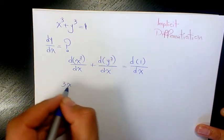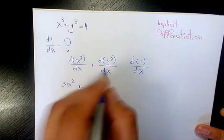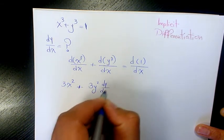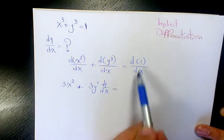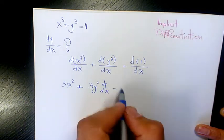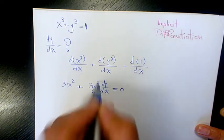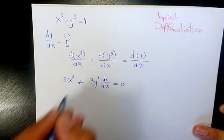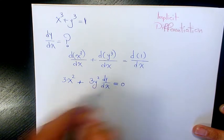So the first one is going to be 3x². The second one is going to be 3y² dy/dx, and the derivative of 1 with respect to x is going to be zero. Then after that I'm gonna isolate dy/dx.